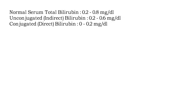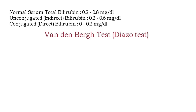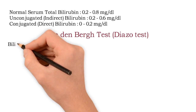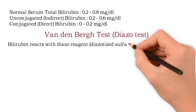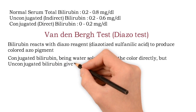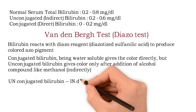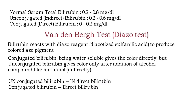Why are they called direct and indirect bilirubin? To understand this, we should know the van den Berg test, also called the diazo test. This test is used for qualitative as well as quantitative estimation of serum bilirubin. The principle is that bilirubin reacts with the diazo reagent — diazotized sulfanilic acid — to produce a colored azo pigment. Conjugated bilirubin, being water-soluble, gives color directly, but unconjugated bilirubin gives color only after addition of an alcohol compound like methanol, meaning it gives an indirect positive van den Berg test. So to remember: unconjugated bilirubin = indirect bilirubin; conjugated bilirubin = direct bilirubin.